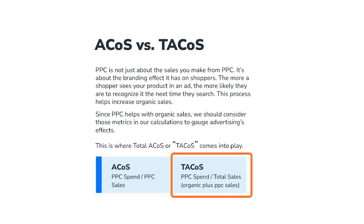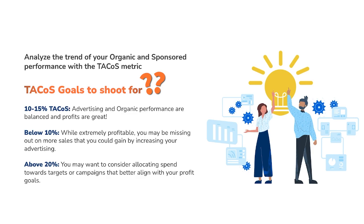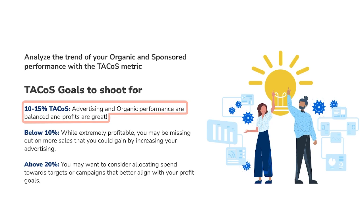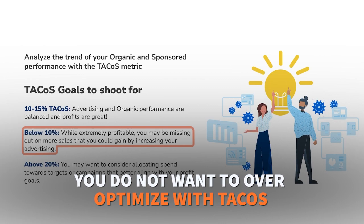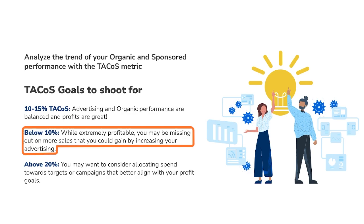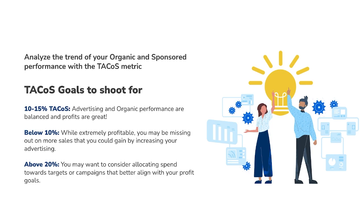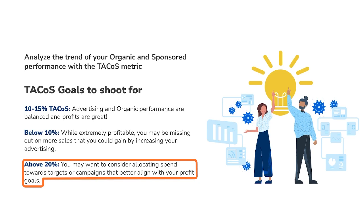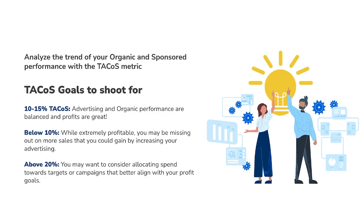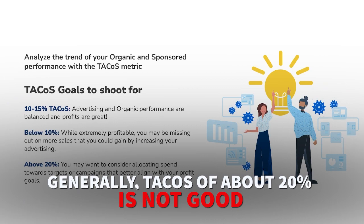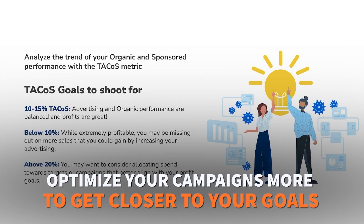What's the TACoS goal to shoot for? Once you analyze your data and look at organic and sponsored performance, a TACoS of 10 to 50% is generally pretty good — advertising and organic performance are balanced and profits are solid. You don't want to over-optimize with TACoS either. Below 10% is extremely profitable, but you might be missing sales you could gain by increasing advertising spend. Above 20% TACoS is essentially what you might already have as a regular ACoS goal — so if your TACoS is above 20%, that's generally not good and you'll want to optimize your campaigns. Of course, every product and margin is different.